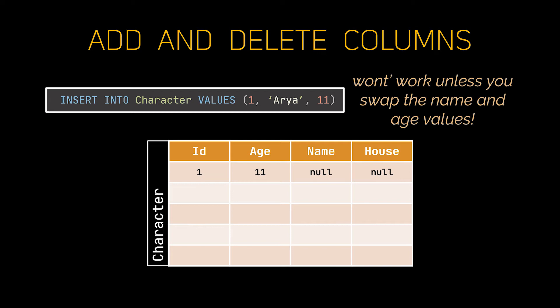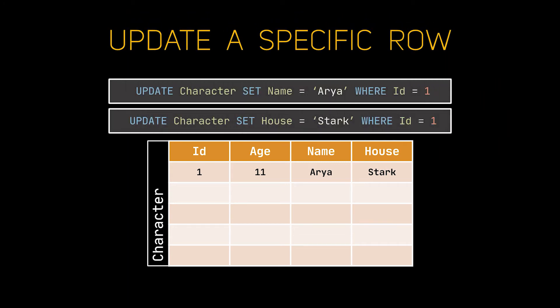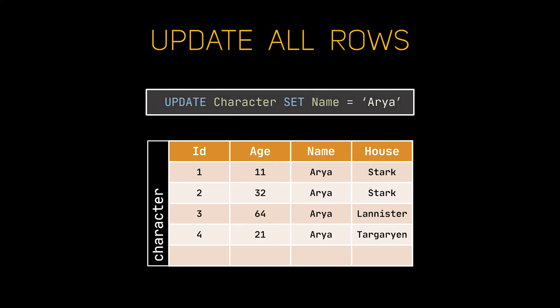The next thing we would like to do is obviously get back the values we lost and update this record inside the table. To update a specific value, you have to specify the exact record you need updated using the UPDATE and WHERE keywords. The WHERE keyword is needed because we want to update a specific record, and not all rows inside the table. In the following statement, we are updating the values stored inside the column name and the column house for the row that has an id of 1. If we used the UPDATE statement without the WHERE keyword, it would have modified the name of all the rows inside the table. So make sure you do use the WHERE keyword if that is not what you want.